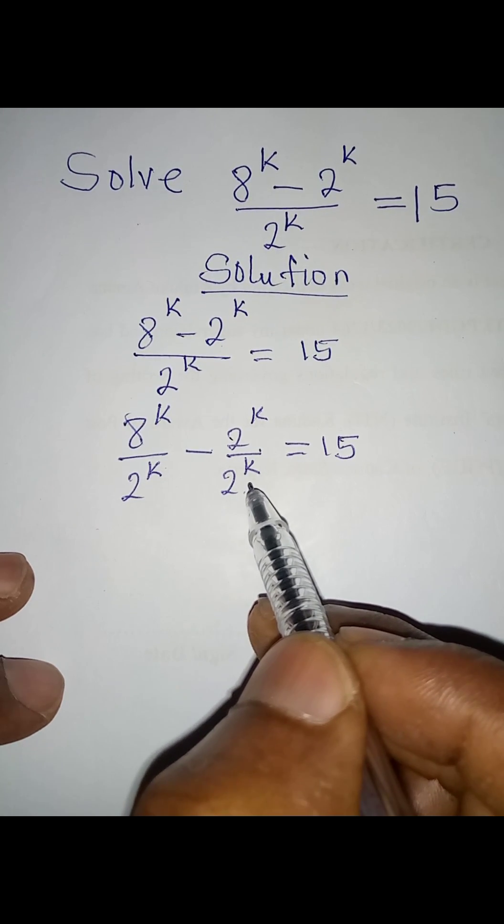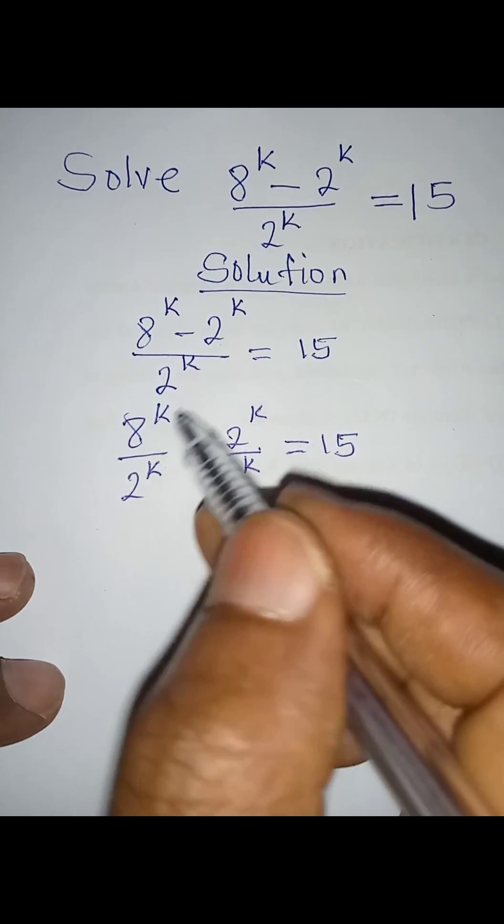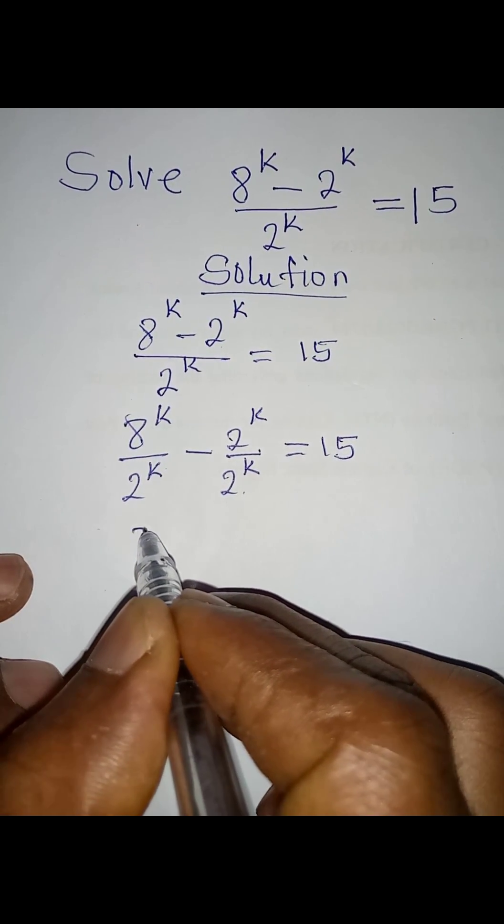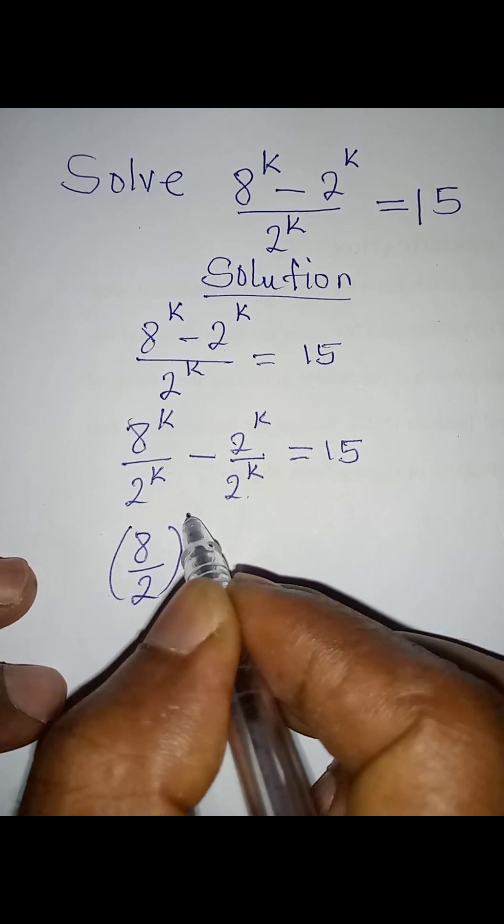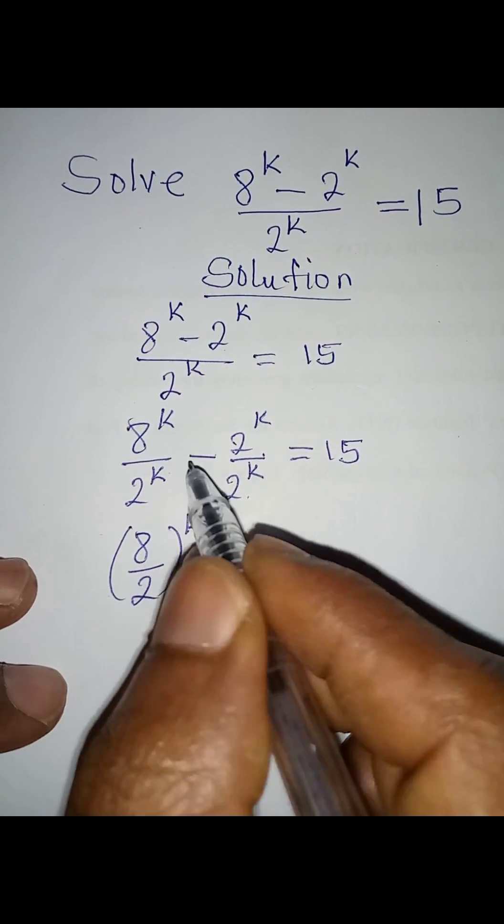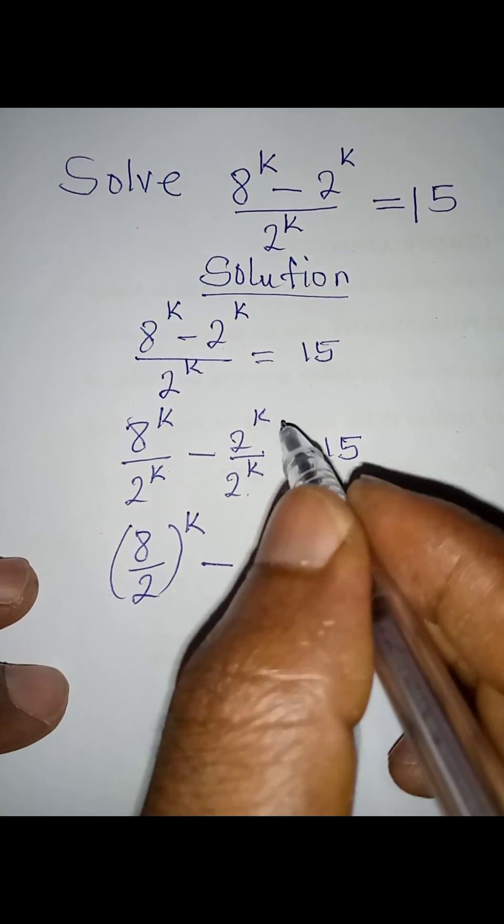And then when you want to work on this, there's nothing wrong if we pick 8 over 2, then both of them raised to the power of k since they are having the same power, then minus this will now turn to 1 equal to 15.